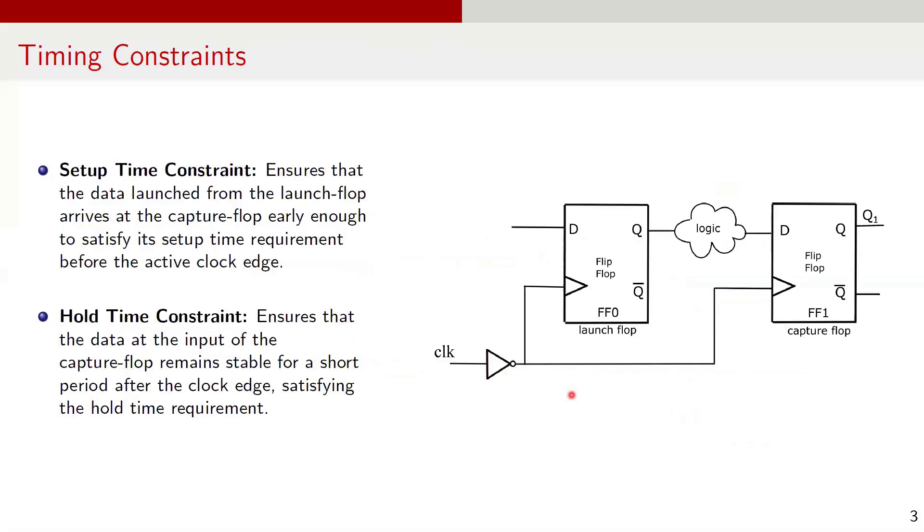Now that we know these basic definitions, it's time to talk about timing constraints. Timing constraints in digital circuits refer to the timing checks between related flops, specifically the launch flop and the capture flop. These constraints must be satisfied to ensure the correct and reliable operation of the design. If the constraints are not met, the data launched from the launch flop may not arrive at the capture flop at the correct time relative to the clock signal. As a result, the capture flop may latch incorrect data, leading to functional errors in the circuit.